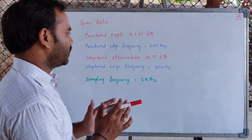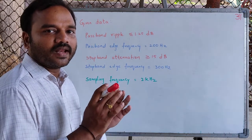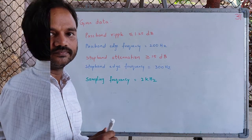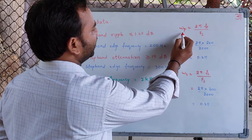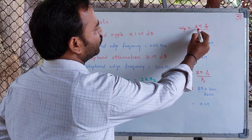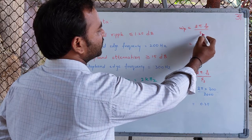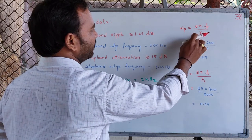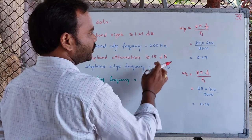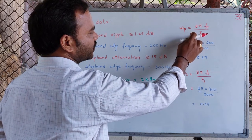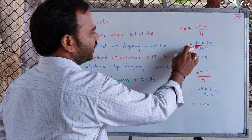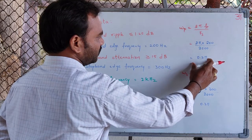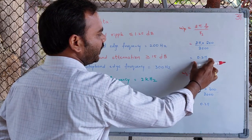As a first step, we will compute the normalized edge frequencies with respect to the sampling frequency. The passband edge frequency in radians is equal to 2π times fp divided by the sampling frequency. The passband edge frequency is given to be 200Hz and sampling frequency is 2kHz. Substituting these values, the passband edge frequency in radians is 2π × 200/2000, which gives us 0.25π radians.